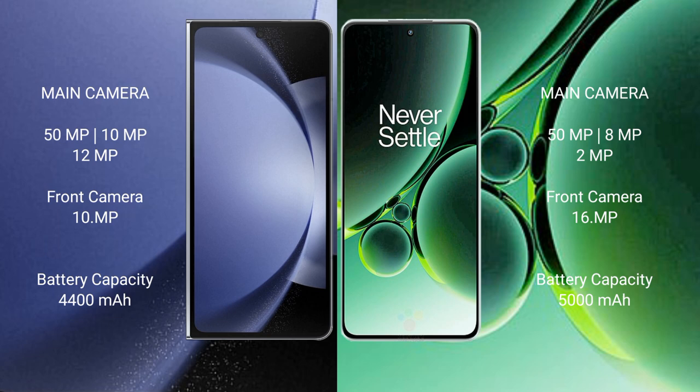Samsung Galaxy Z Fold 6 has a 4400mAh battery with 45W fast charging support. OnePlus Nord 3 has a 5000mAh battery with 80W fast charging support.